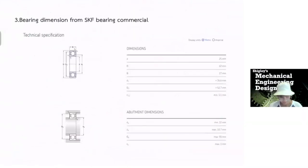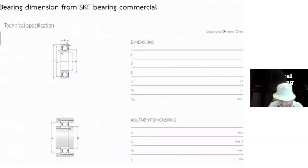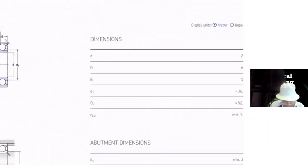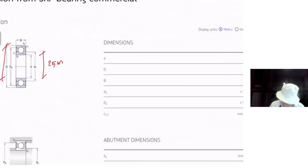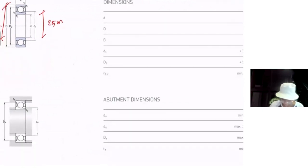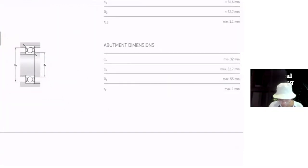This is the bearing dimensional from SKF bearing commercial. It's a technical specification. We got to see it clearly. So, the small diameter here is 25 mm. The big one is 62 mm. And the thickness is 17 mm. This is another dimension of the bearing.